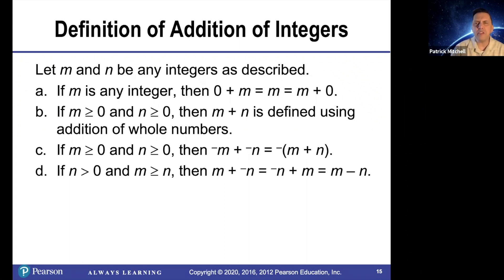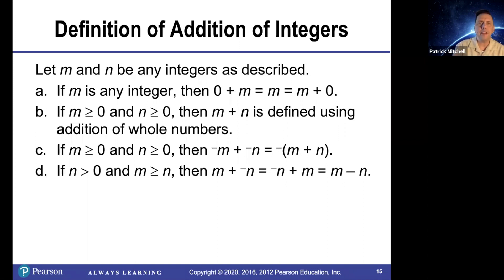I definitely would not recommend teaching it this way. If n is greater than zero and m is greater than or equal to n, then m plus negative n is the same thing as m minus n. For example, eight plus negative two is the same thing as eight minus two — it always makes more sense when you look at an example.